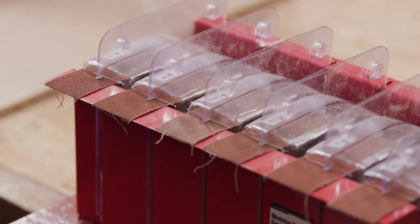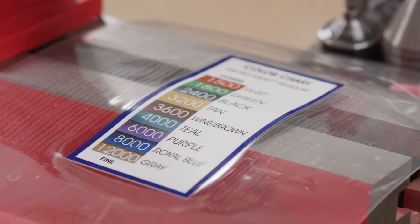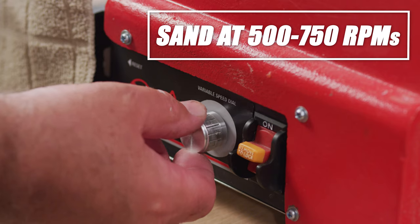For a superb shine on acrylics or wood blanks finished with cyanoacrylate, wet sand using the nine grit micromesh pads that range from 1500 to 12,000 grit, sanding at a speed of 500 to 750 RPM.